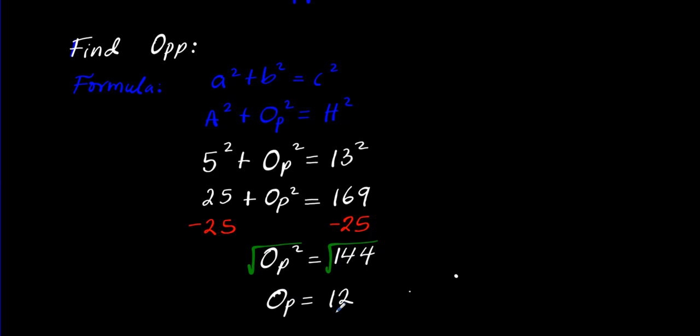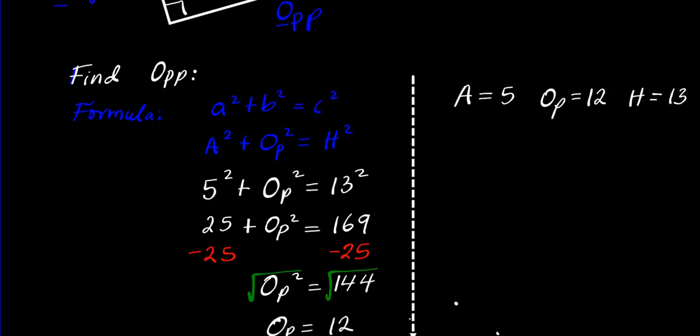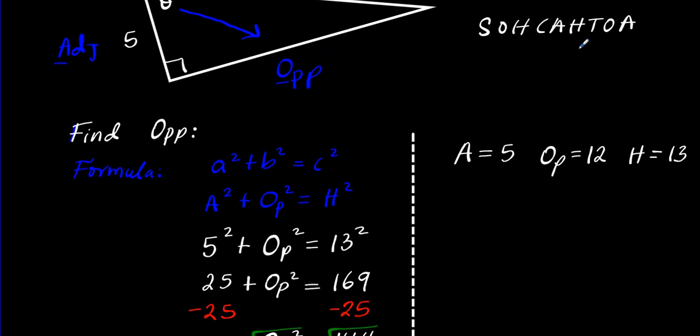Now that we have all three sides we can go ahead and solve the problem. Let's partition our workspace down the center. We know that the adjacent is 5, the opposite is 12, and the hypotenuse is 13.